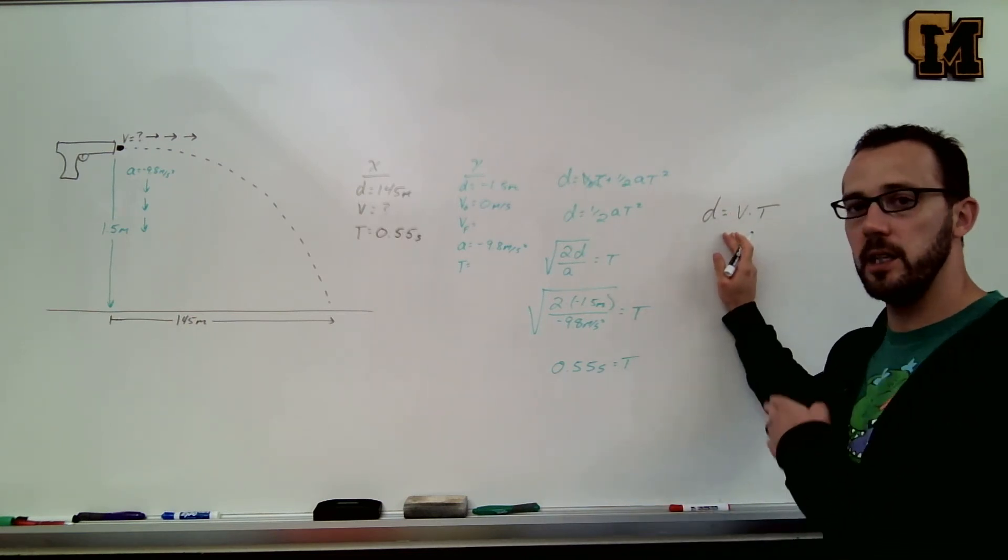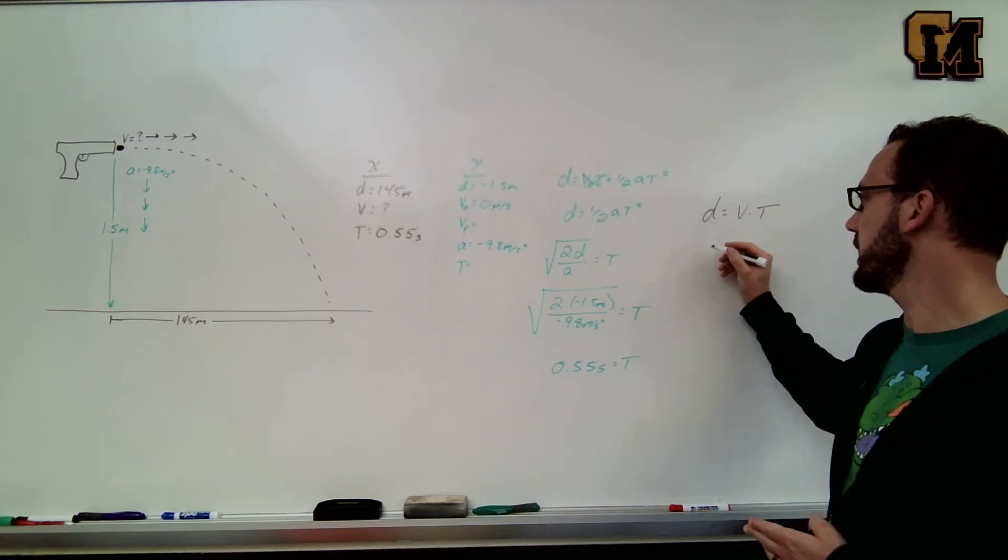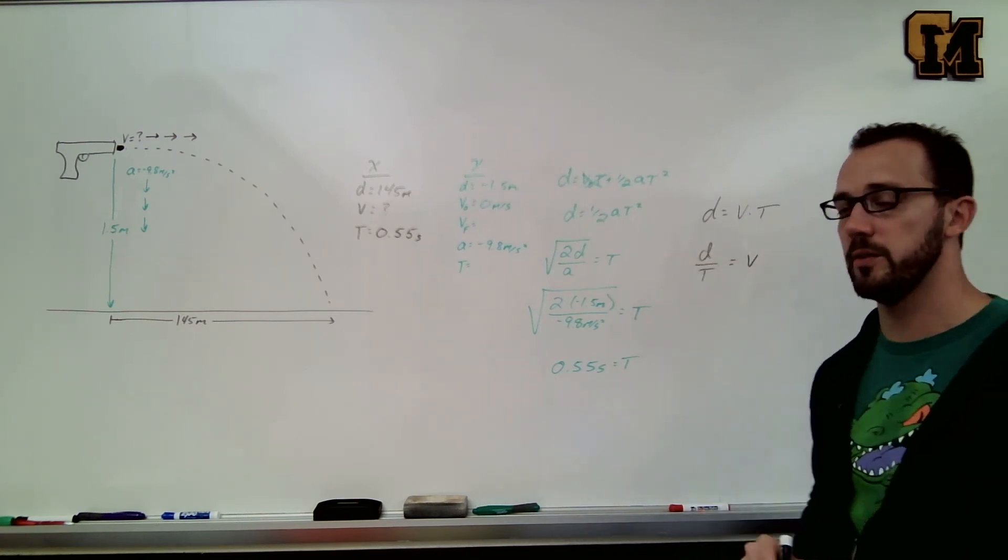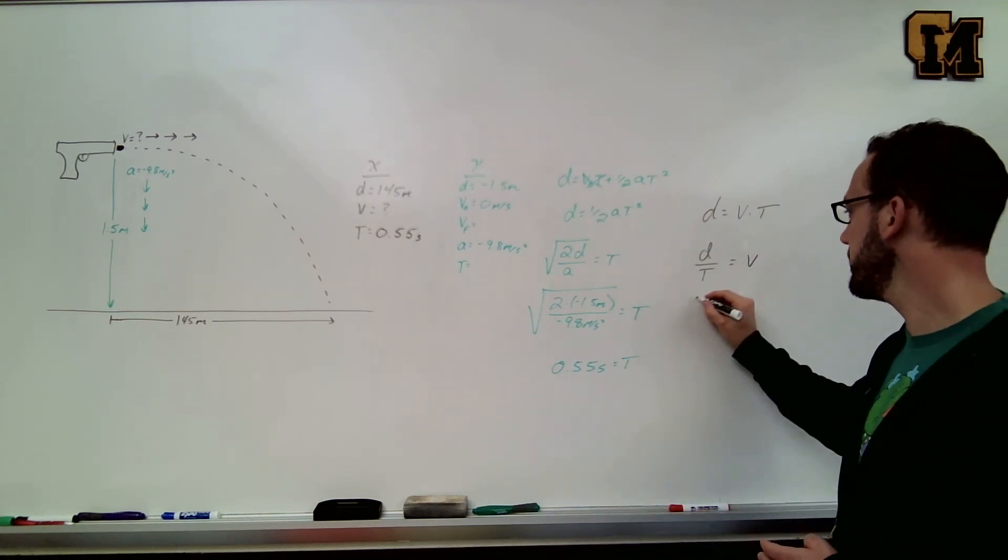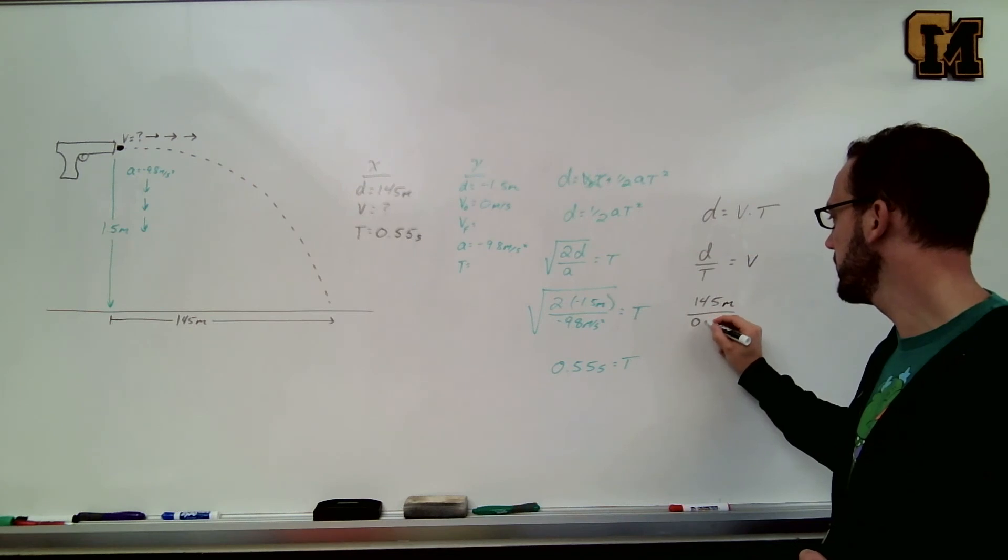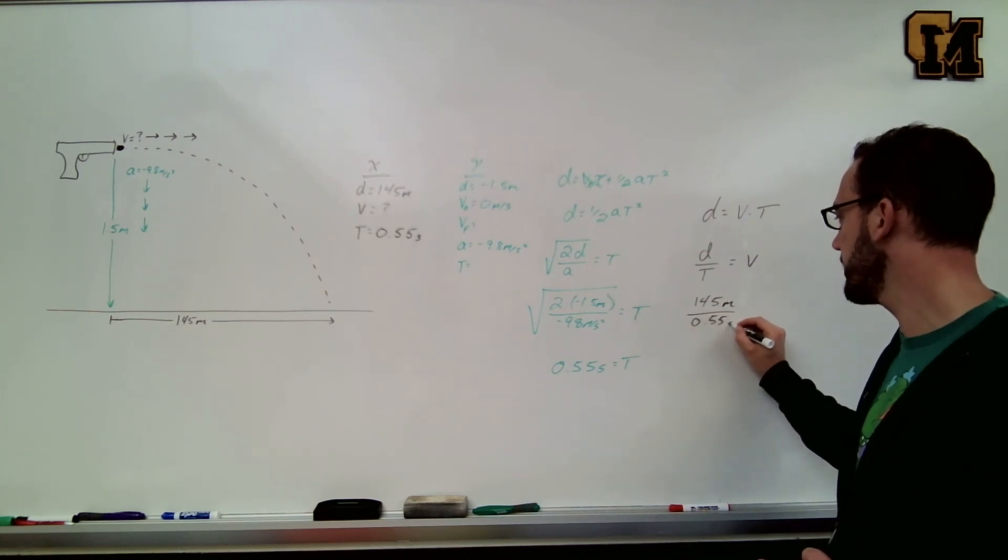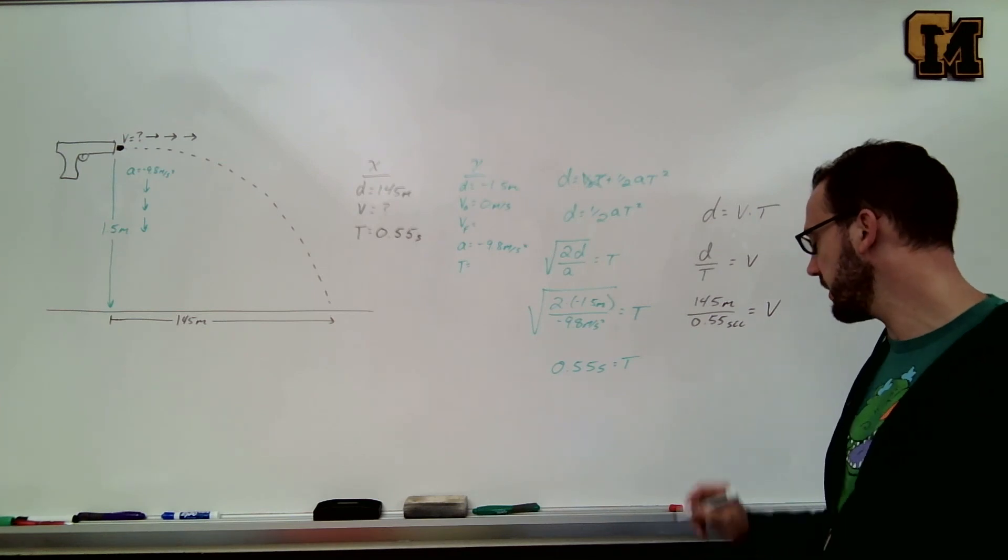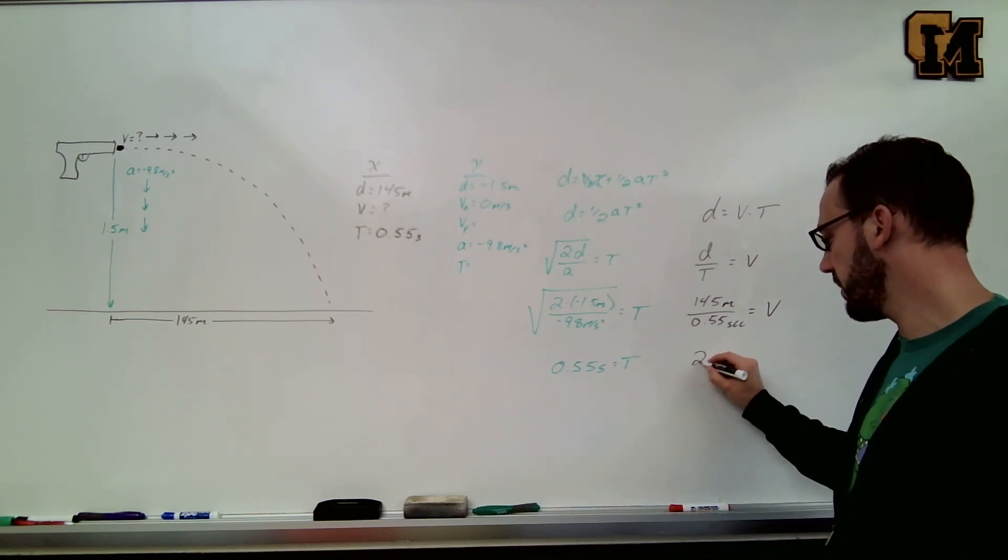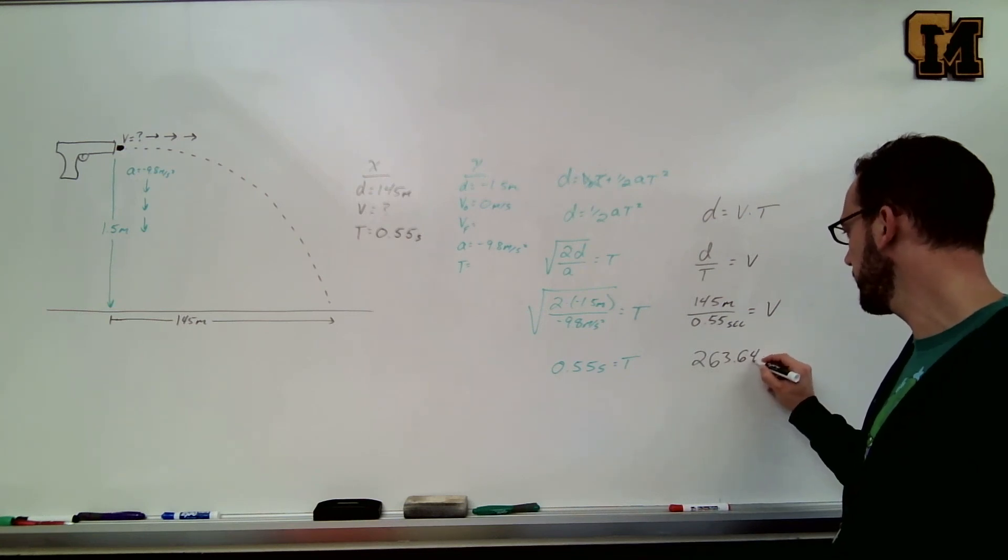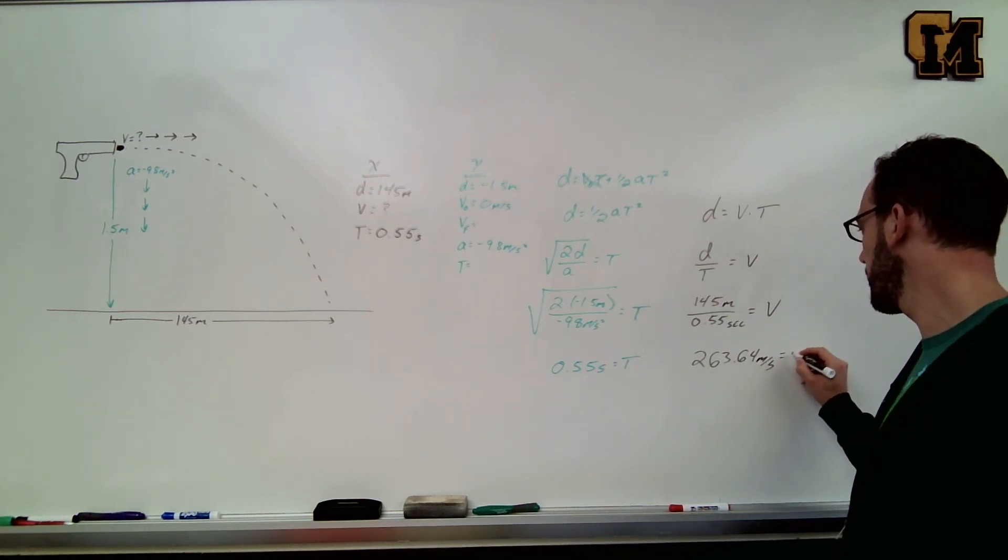Solving for velocity, we're going to divide time to the other side. D over t equals velocity. Our displacement is 145 meters. Our time is 0.55 seconds. And when I plug that into my calculator, I get that my velocity is 263.64 meters per second.